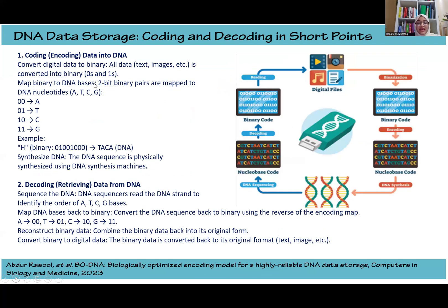Now that we know DNA data storage is much better than traditional storage media, let's learn how we actually store data in DNA. It comprises coding and decoding. Coding or encoding data in DNA consists of the following steps: first, we convert the digital data into binary with the help of ASCII; then the binary is converted into DNA bases or nucleotides with the help of mapping, where A is 00, T is 01, C is 10, and G is 11. Then we synthesize this DNA into synthesizing machines, and then we have our DNA.